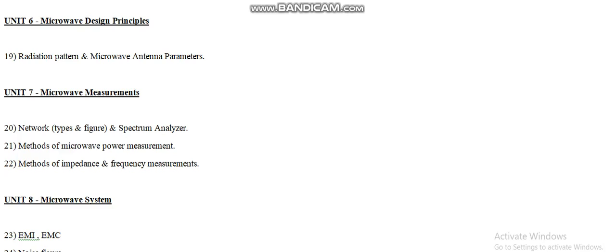Now let us have a look at unit number seven, that is Microwave Measurements. According to question number twenty, there are two types of analyzers: network analyzer and spectrum analyzer. In two marks, we need to define them; in four marks, we need to draw the types and figures for both. Question twenty-one is about the method for microwave power measurement — this is a most important and repeated question. Question twenty-two covers methods of impedance and frequency measurements, which is also an important question.